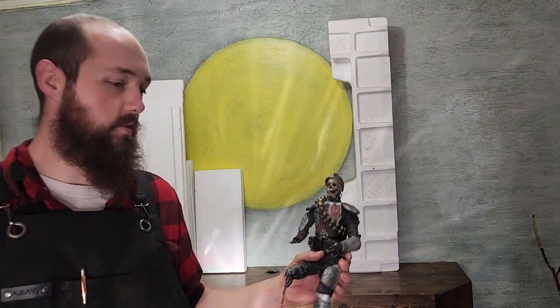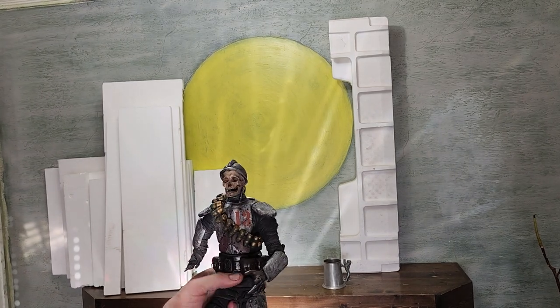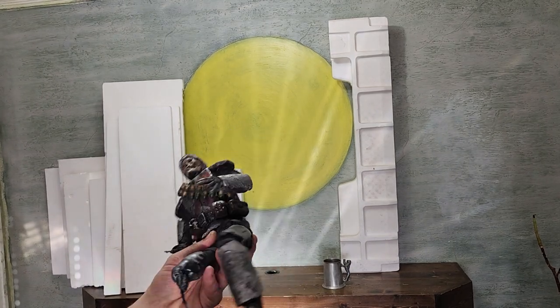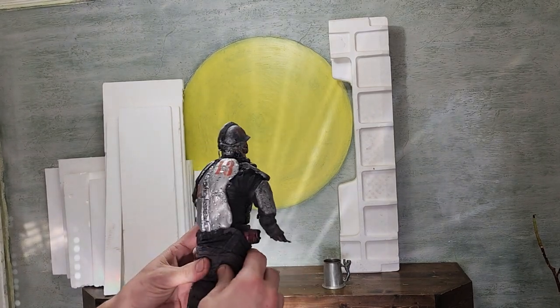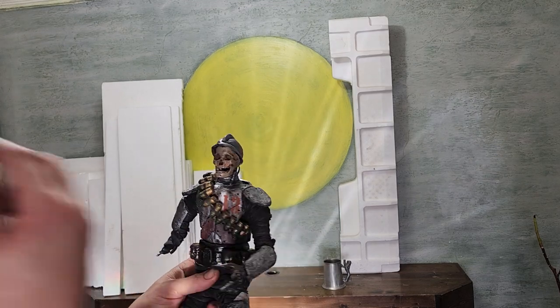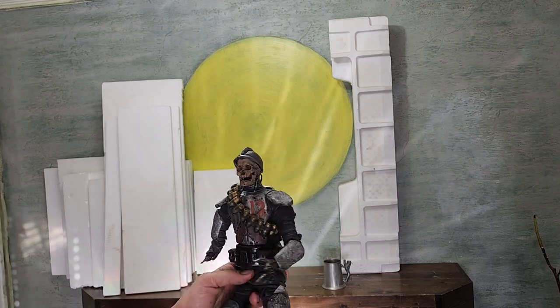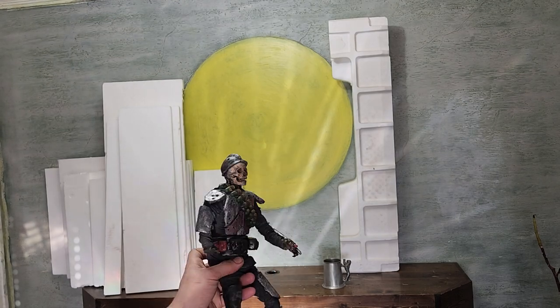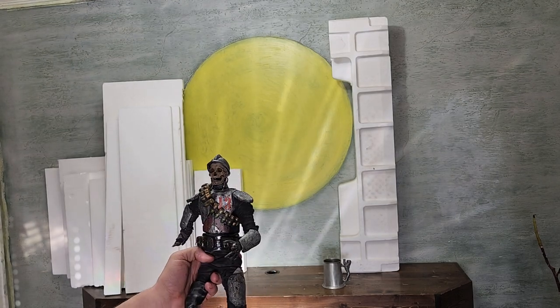So we're going to be making a diorama and a scene to go with this gentleman here. This is Old Number 13. He's a wire and t-shirt recycled material sculpture. All this is just little bits of plywood that I've sculpted over with Aves Epoxy Sculpt. Go check them out.